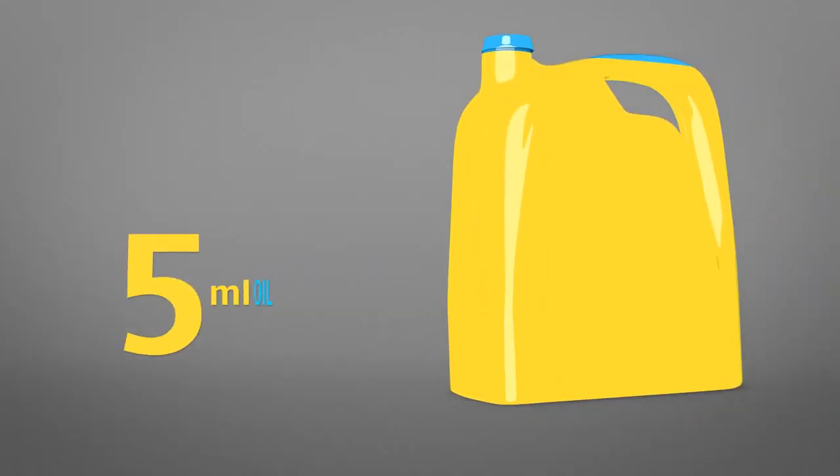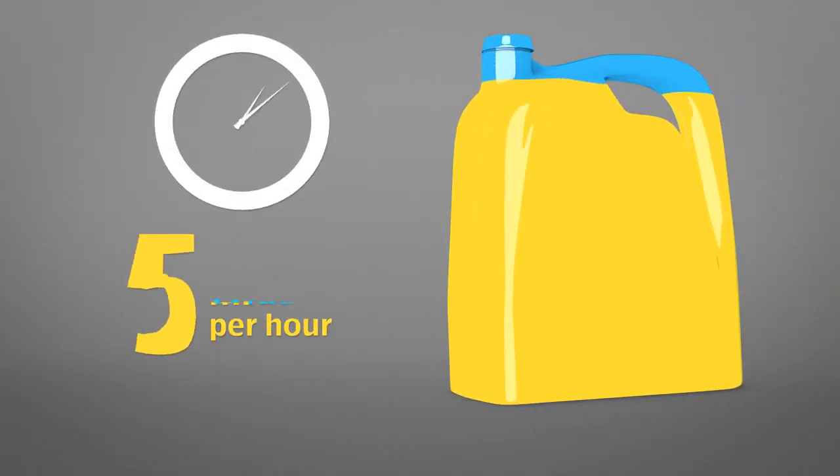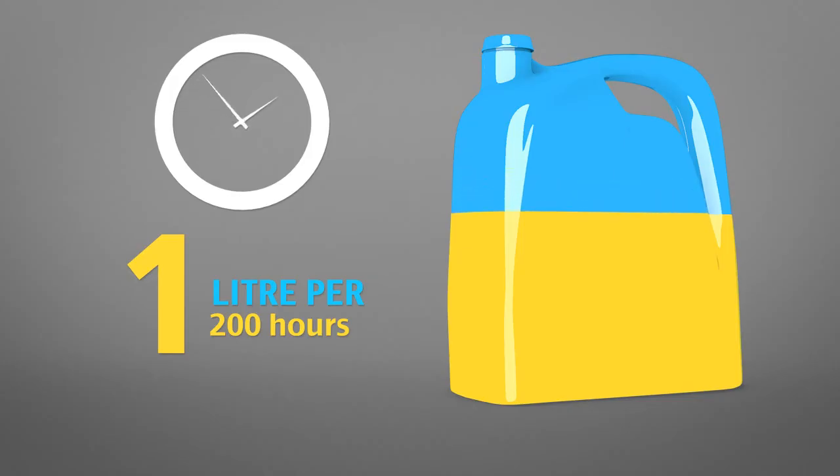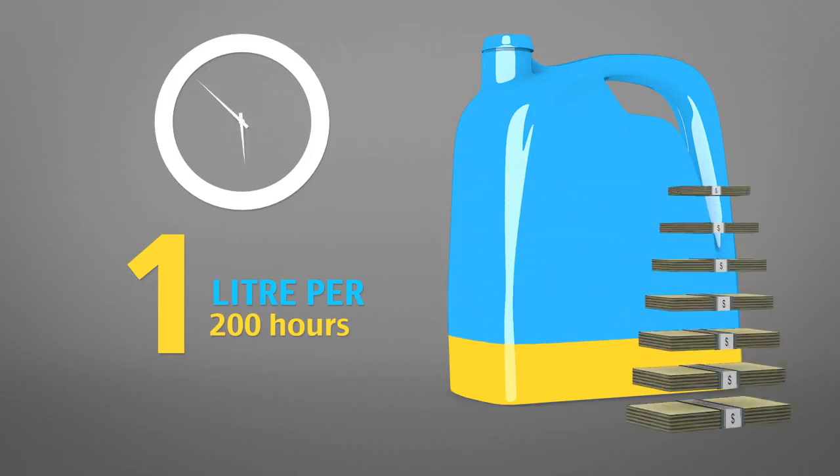A separator losing oil at 6 parts per million could lose around 5 millilitres of oil every hour, or 1 litre every 200 hours, adding more avoidable cost to your annual bill.